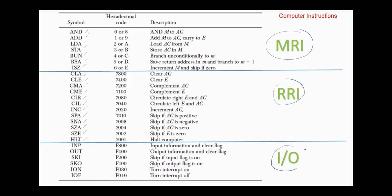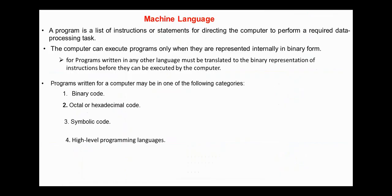The final group is for input, output, and interrupt: INP (input), OUT (output), SKI (skip if input flag is on), SKO (skip if input flag is off), ION (turn interrupt on), IOF (turn interrupt off). We will use the instruction set of the basic computer to illustrate many programming techniques. Commercial computers have more instructions, as we will learn in the next chapters. A program is a list of instructions or statements for directing the computer to perform a required data processing task. The computer can execute programs only when they are represented internally in binary form. Programs written in any other language must be translated to the binary representation of instructions before they can be executed by the computer.